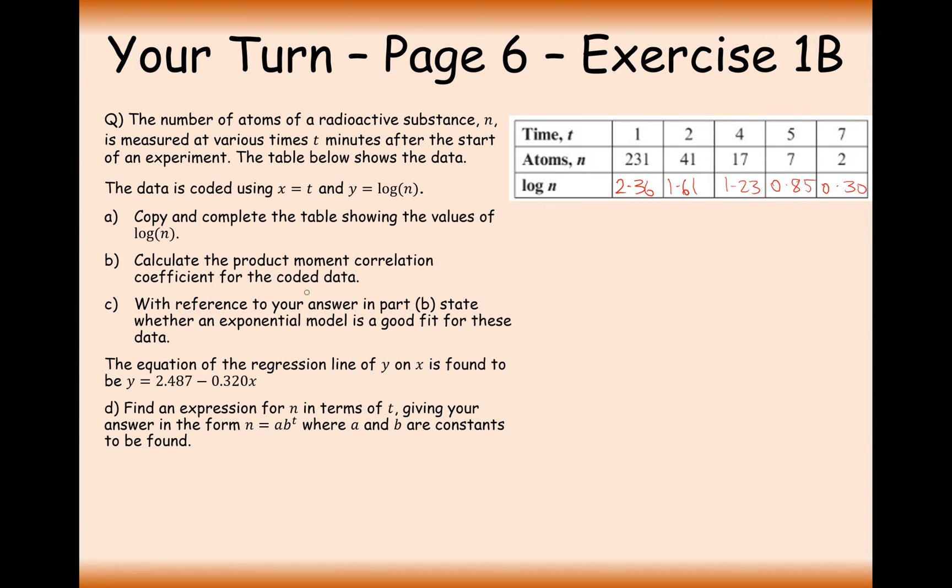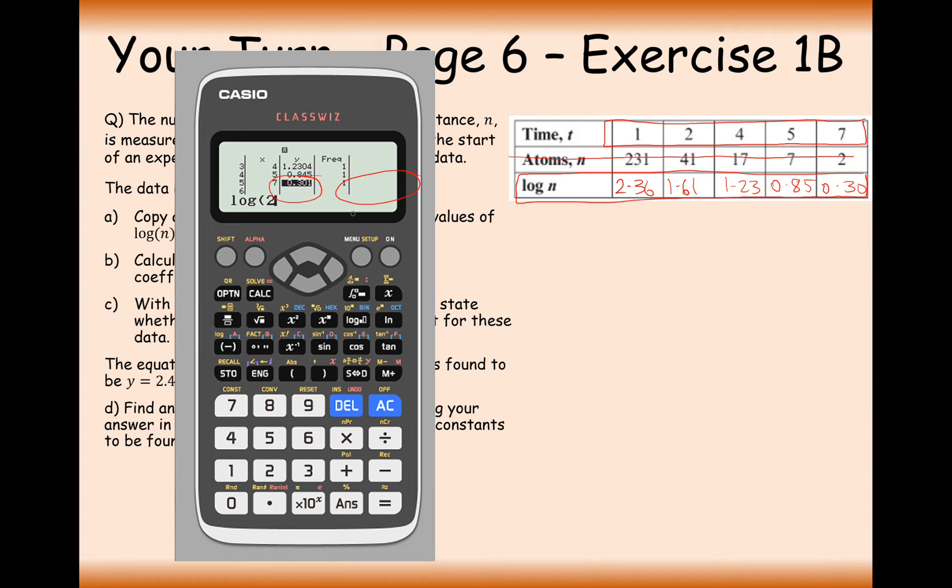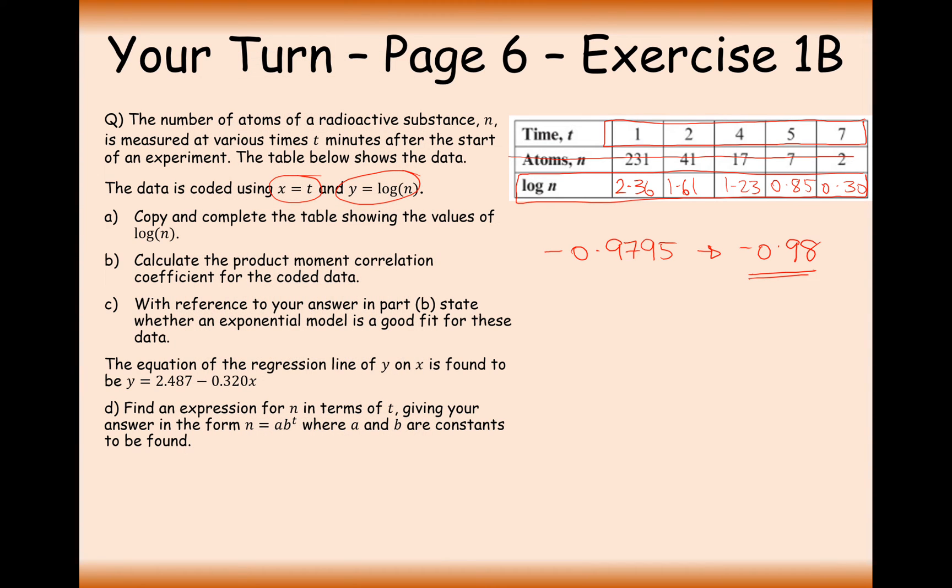Calculate the product moment correlation coefficient for the coded set of data. The data that I'm going to type into my calculator is the time because that's the X variable and then it's going to be the Y variable of log of N. I'm going to type in this set of data and effectively ignore the atoms N column. What I would suggest you do in the Y column is to actually use your log button and type in log of 2, for example, into those values there. Your product moment correlation coefficient is going to be minus 0.9795. Let's round that to minus 0.98. So pretty perfect negative correlation there.